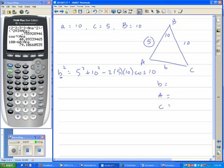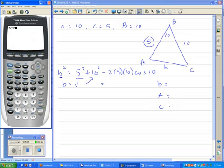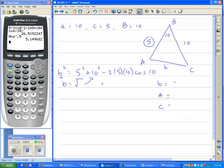On the right-hand side, nothing but numbers. B squared. So, that means B would be the square root of all of that. I'm going to type all of that in. 5 squared plus 10 squared minus 2 times 5 times 10 times the cosine of 10. And that would be that mass. I'm going to raise that to the half power or take the square root. And there's your B value, 5.1497. Keep that answer handy.